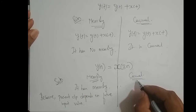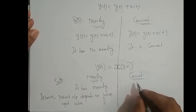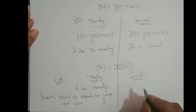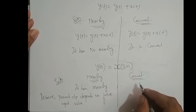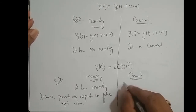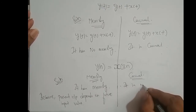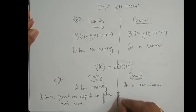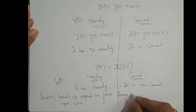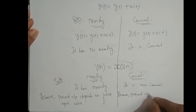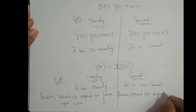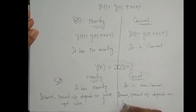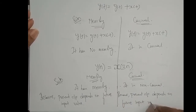For causality of y[n] = x[3n]: it is non-causal. The definition of non-causal is that if the present output depends upon future input value, then the system is non-causal. Therefore, it is non-causal, because present output depends upon future input value.